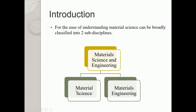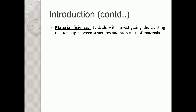The creativity lies in the engineering part. Material science deals with the section where you don't have much creativity — you simply discover and identify what is available. Its formal definition: material science deals with investigating the existing relationship between the structures and the properties of materials. Here you don't have much freedom to make changes; whatever is naturally available, you simply discover it and study the phenomena of how it is happening.